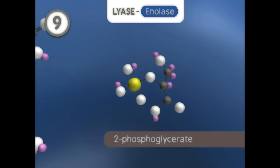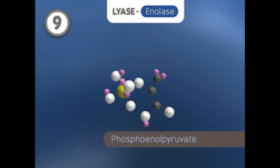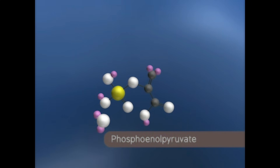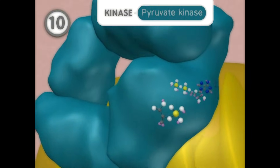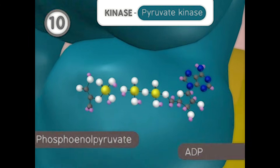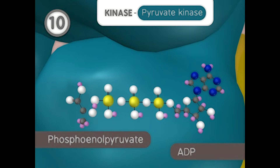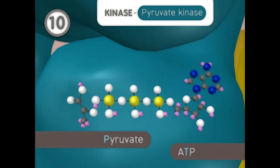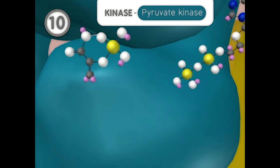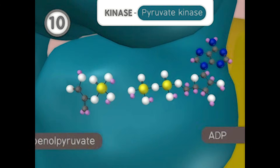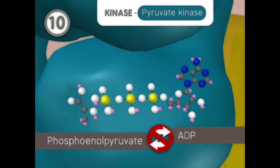In step 9, a lyase reaction removes water from 2-phosphoglycerate to form phosphoenolpyruvate. In the final step of glycolysis, a kinase reaction removes the phosphate group from phosphoenolpyruvate and donates it to ADP to form ATP and pyruvate. Like reactions 1 and 3, this step is irreversible.